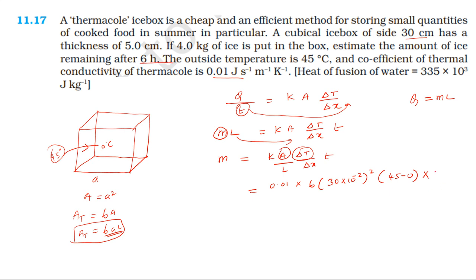6 hours. 6 hours = 6 × 3600 seconds, so 6 × 3600 seconds. Divide by the latent heat, the latent heat is 335 × 10³, into Δx...